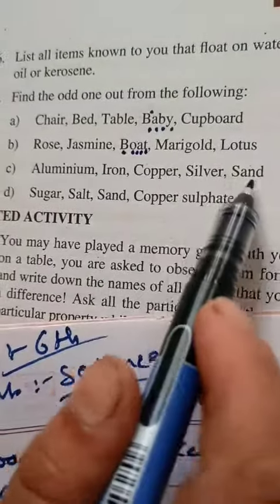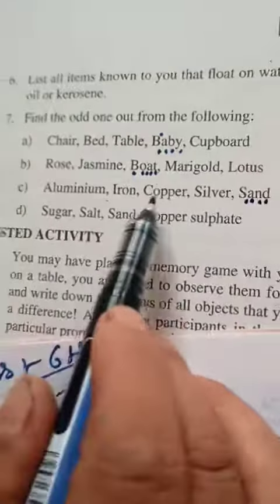Aluminum, iron, copper, silver. There is sand. You can see it when you put it on your hand. If you use silver, aluminum, iron, copper, silver.